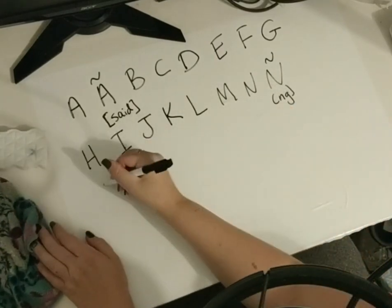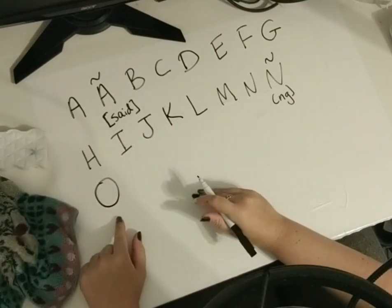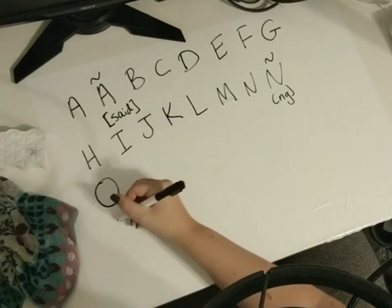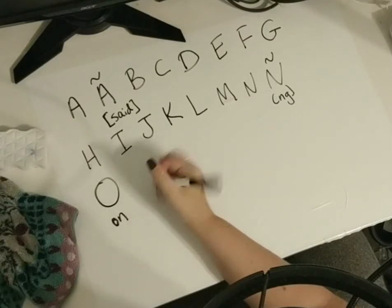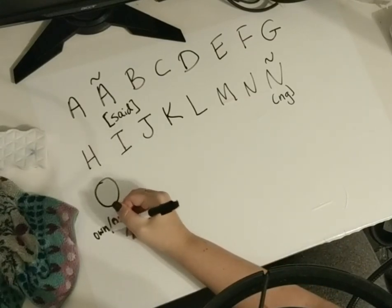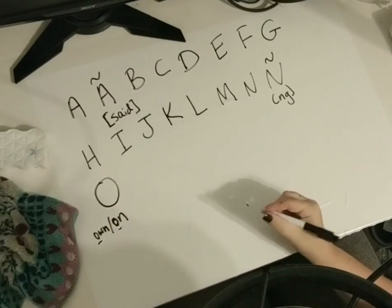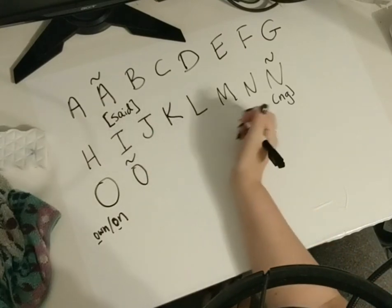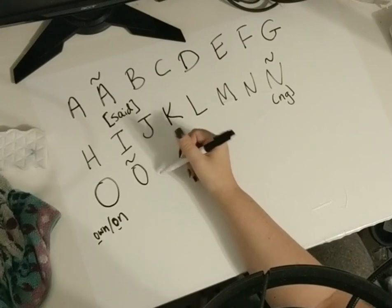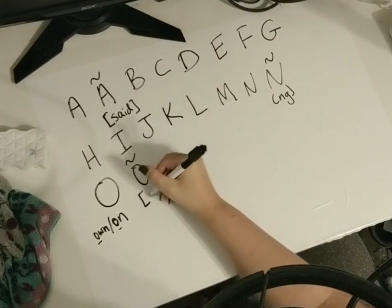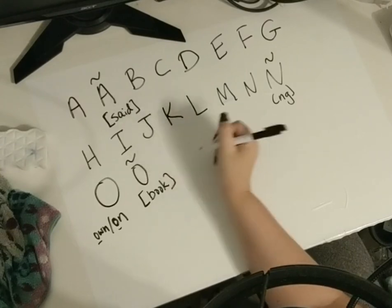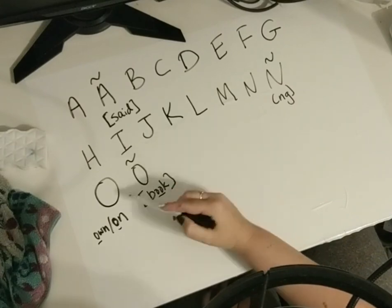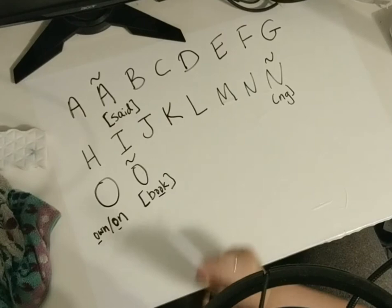We've got two O's. The plain O can be pronounced either 'oh' or 'ah' — think of the word 'on' (not 'own'), but it can also be pronounced like 'own.' And then we have O with an accent, which is pronounced 'uh' — the best example is the word 'book.' Even though it's a double-O spelling, it's an 'uh' sound. So: O is 'oh' or 'ah,' and accented O is 'uh.'